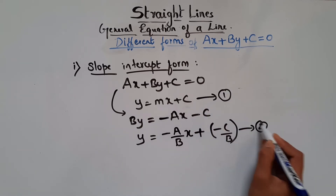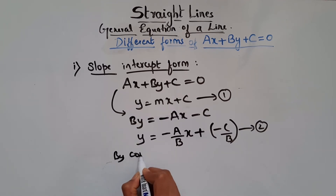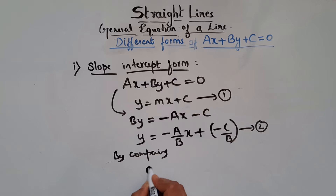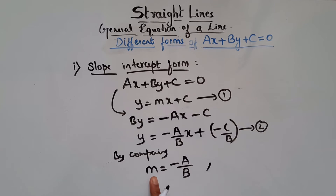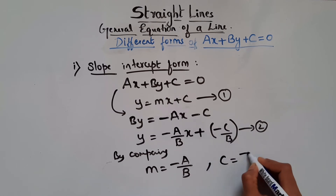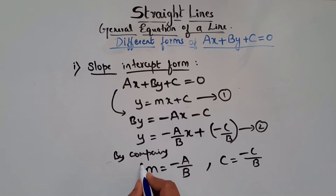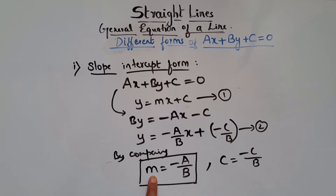By comparing equation 1 and equation 2, we can say the slope m equals minus A over B, and the y-intercept c equals minus C over B. So when the equation of the line is given, we can directly find the slope using m equals minus A over B, and the y-intercept using minus C over B.